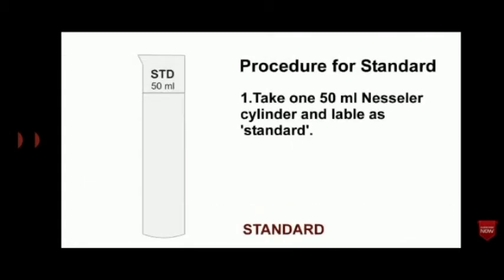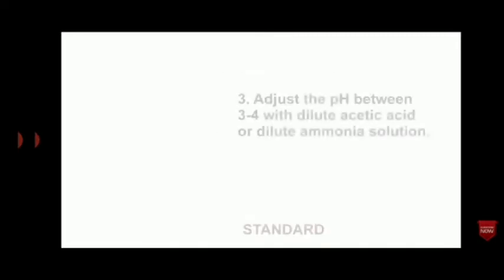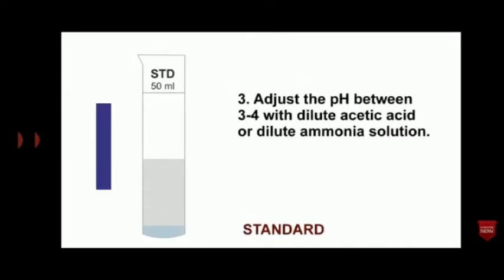Coming to the procedure for standard: take one 50 ml Nessler cylinder and label it as standard. Take 2 ml of standard lead solution, pipette it into the Nessler cylinder, and dilute with distilled water to produce 25 ml. Adjust the pH between 3 to 4 with dilute acetic acid or dilute ammonia solution.